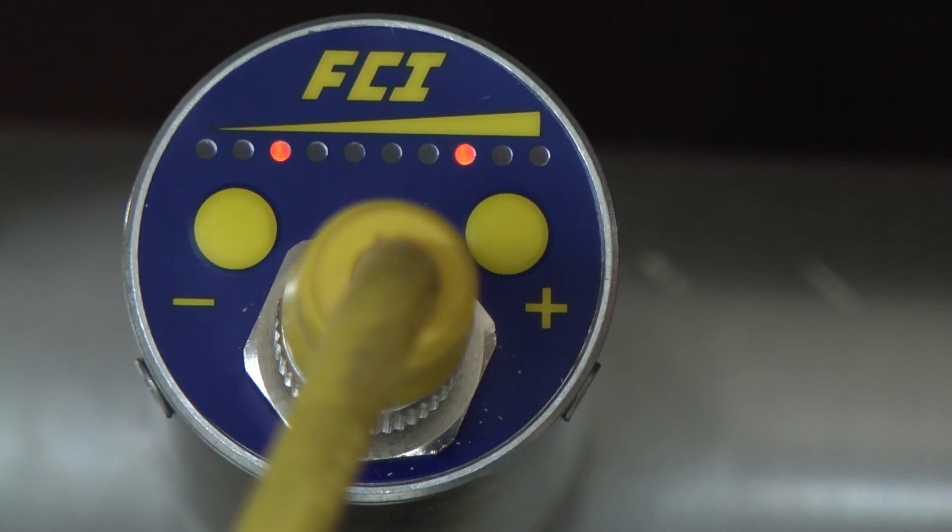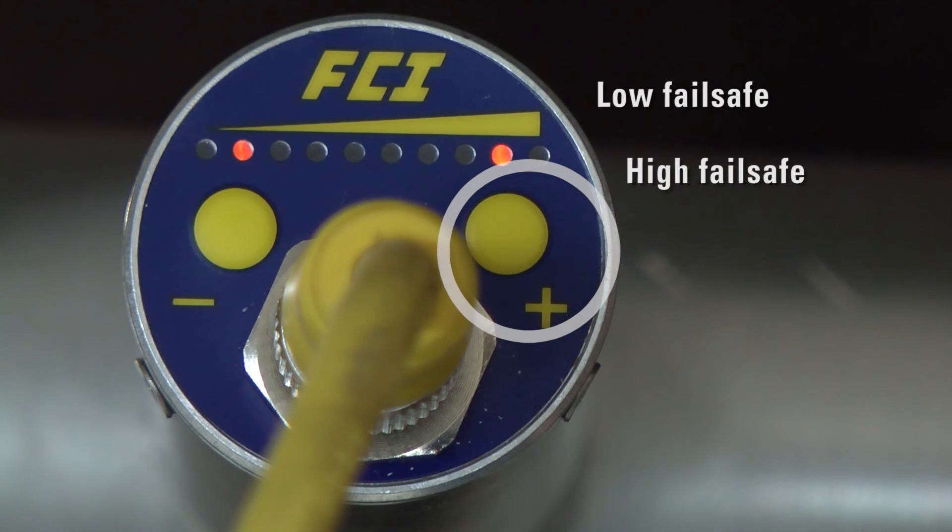As described earlier, momentarily press the minus button to exit with a fail-safe low—that is, relay de-energized in the alarm state—or the plus button for fail-safe high—that is, relay de-energized above the trip point.